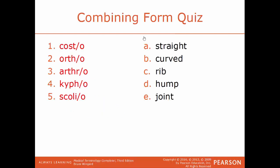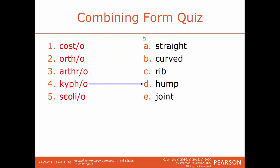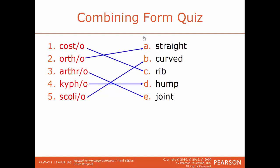A combining form quiz: costo refers to rib; ortho refers to straight; arthro refers to joint; kypho refers to hump; scolio refers to curved. That brings us to the end of chapter number six on the skeletal and muscular systems. We will continue our video series on medical terminology with our next video on chapter number seven.